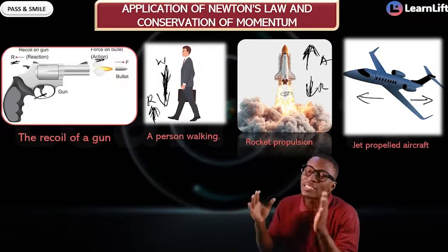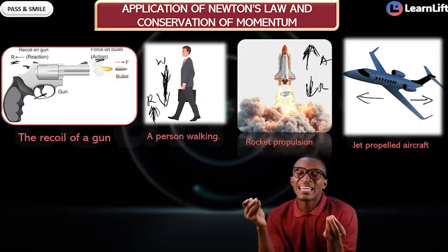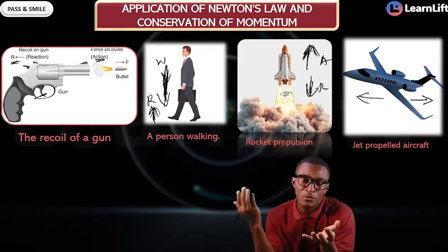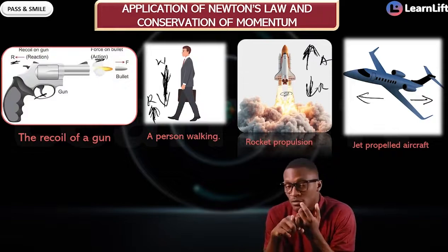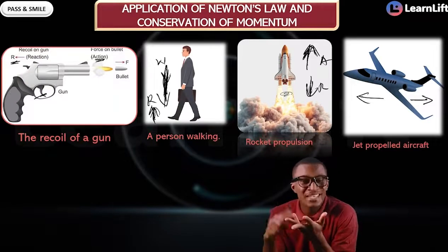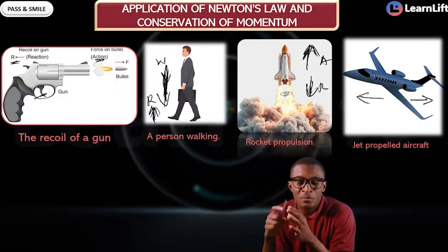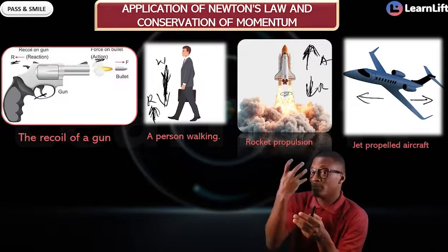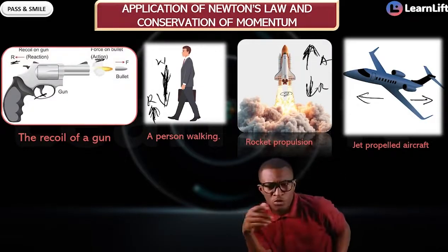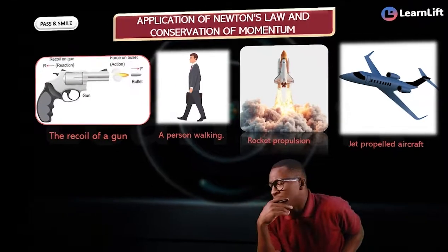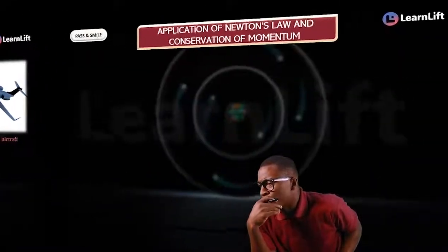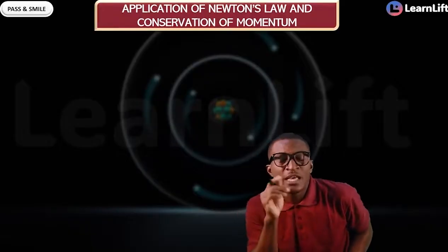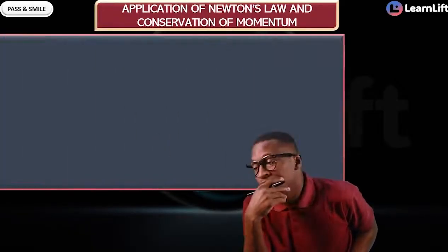To review: the four applications of Newton's third law and conservation of momentum are — number one, recoil of the gun; number two, a person walking (the person exerts their weight on the ground and the ground exerts its force back); number three, rocket propulsion; and number four, jet aircraft propulsion.